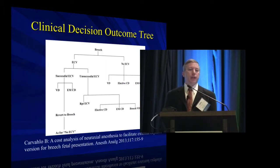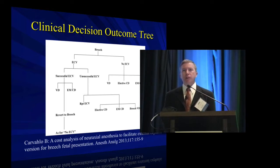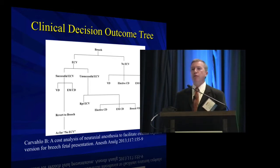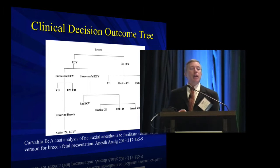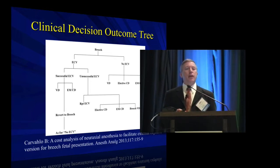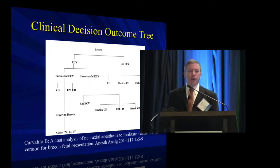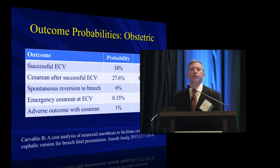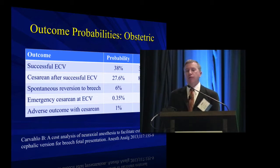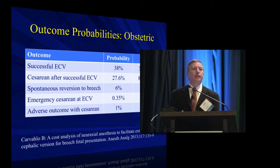First of all, you need a clinical decision outcome tree. In management of breech presentations it's fairly simple — this is what it looks like. Are you going to attempt to turn a baby or not? If you're going to do it, are you going to do an epidural? Are you successful or not? Should you reattempt it? Does the baby revert back to breech position? If you've been successful in turning the baby, do they end up laboring and being sectioned for arrest of dilation anyway? What are the probabilities? We actually know because we've had six randomized controlled trials in this realm. But note there still is a range of probability that starts to add uncertainty to this equation.